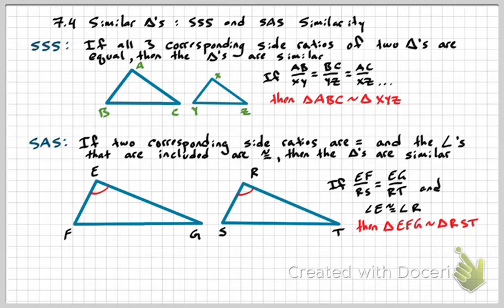That's all the new information for today. The rest of the notes is just me showing you different examples of how this might look. Not a whole lot of new information — just brings us to three different shortcuts: angle-angle, side-side-side, and side-angle-side. The biggest thing to remember is whenever you see an A in a shortcut, that's talking about congruent corresponding angles. Whenever you see an S, that's referring to a ratio of a side being equal to another ratio.